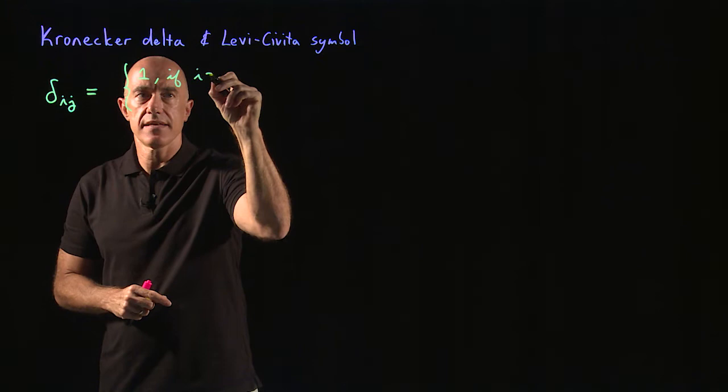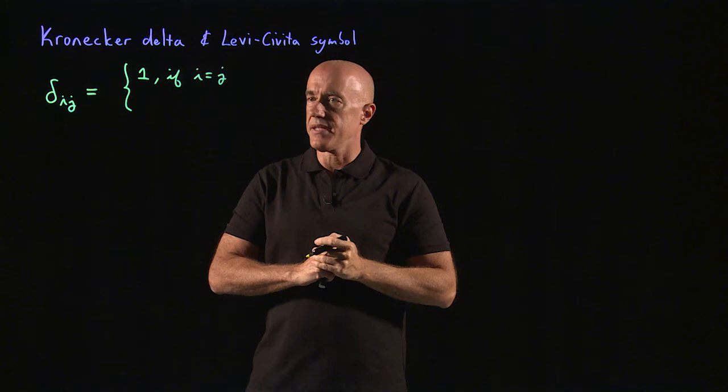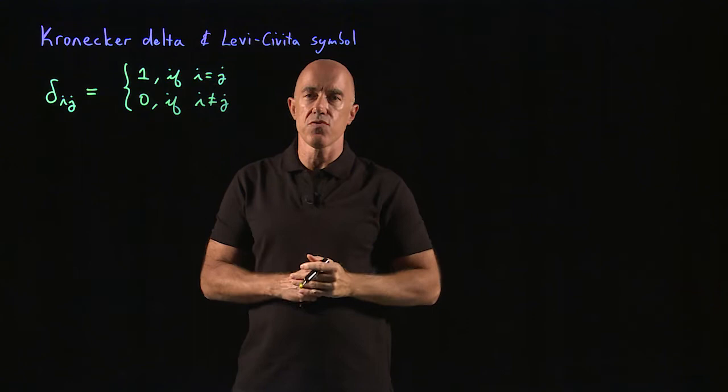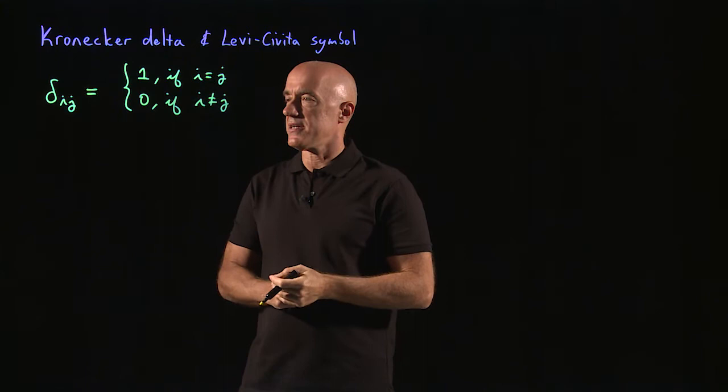And then this has two distinct values. It will be equal to 1 in the case when i is equal to j. So delta 1,1 is 1, delta 2,2 is 1, and delta 3,3 is 1. And it's equal to 0 if i is not equal to j. So something like delta 1,2 or delta 1,3 would be 0.